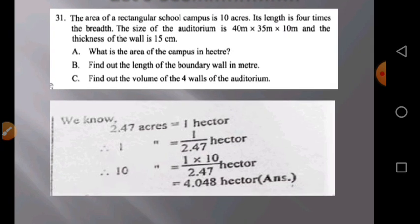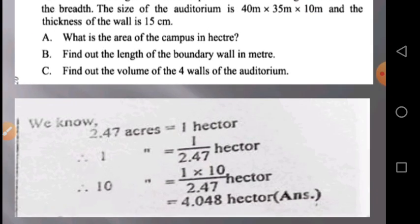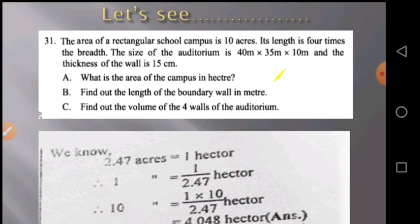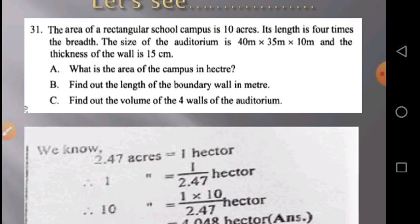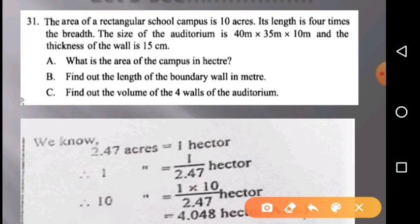Here you can see the question with solution. At first we will read out the question. The question is: the area of a rectangular school campus is 10 acres. Its length is four times its breadth.